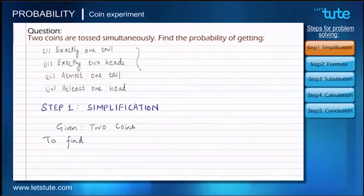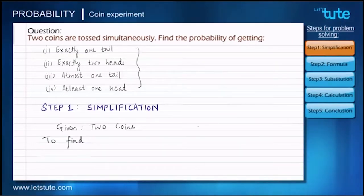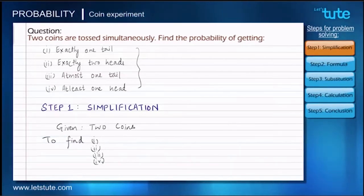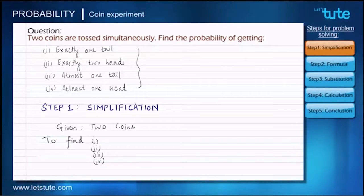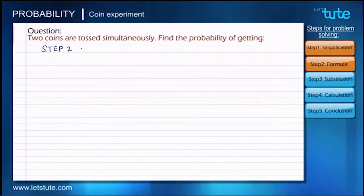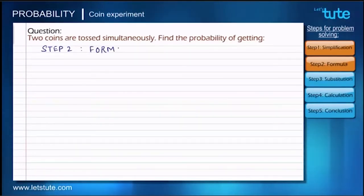What we need to find out: in this question we have been provided four events for which we need to find the probability, and we'll write all four events in this section. These are the things that are given and we need to find out. Now we shall proceed to isolate the kind of formula we are going to use in order to solve this question.